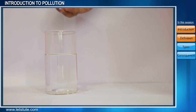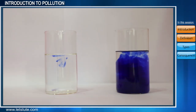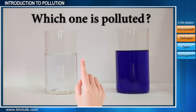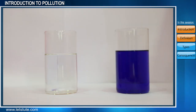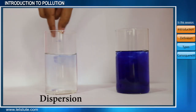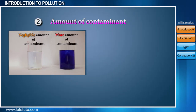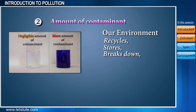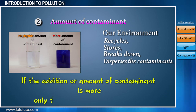To understand this, let's consider a clean glass of water to which we add just one drop of ink, and to another glass of water, we pour an entire bottle of ink, and stir both glasses. So which one will you call polluted? Both glasses have a contaminant — the ink we added. In the first case, the drop of ink just dispersed and the water is almost clear, indicating a negligible amount of contaminant. But the second glass has a greater amount. Our environment has a natural ability to accommodate contaminants by recycling, storing, breaking them down, or dispersing them. But if their addition is at a rate faster than what our earth can handle, only then do we call it pollution.